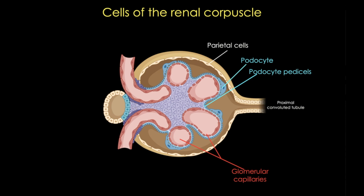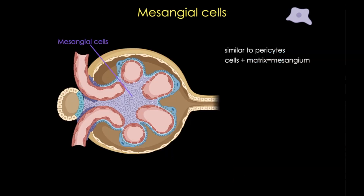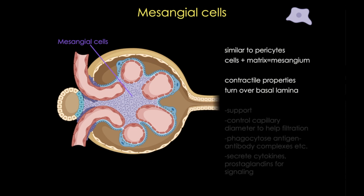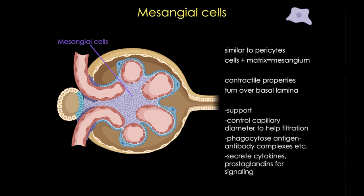In addition to the capillary endothelial cells and podocytes, the corpuscles contain mesangial cells. These cells are very similar to vascular pericytes — they can contract and respond to blood pressure changes, and they also help turn over the basal lamina. They have many functions in the kidney, helping with filtration and signaling, and diseases that affect these filtration processes can affect these cell activities, sometimes with serious consequences.